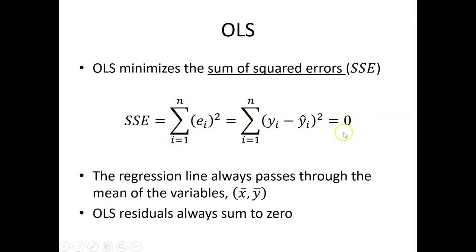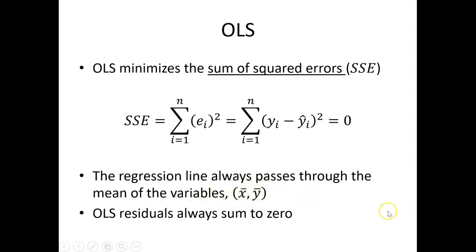The sum of these errors is going to be equal to zero. Ordinary least squares finds the coefficients, or the parameters, that minimize these squared errors. Another thing about the ordinary least squares regression line is that it always passes through the mean of the variables — there will be one point representing the mean of the independent variable and the mean of the dependent variable, and the regression line will always pass through that.